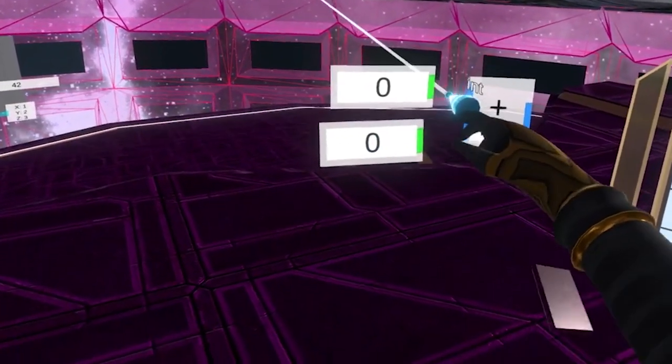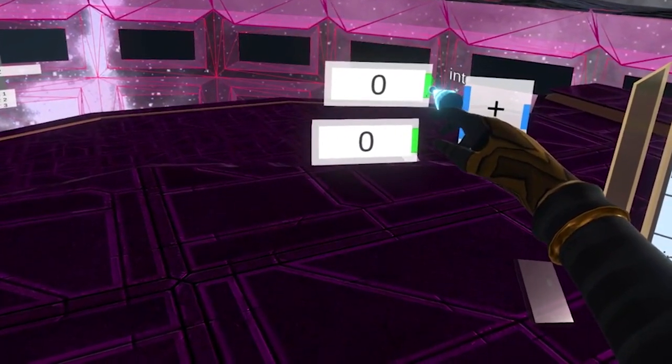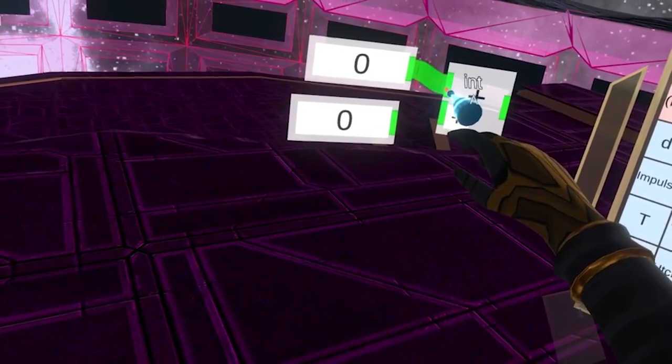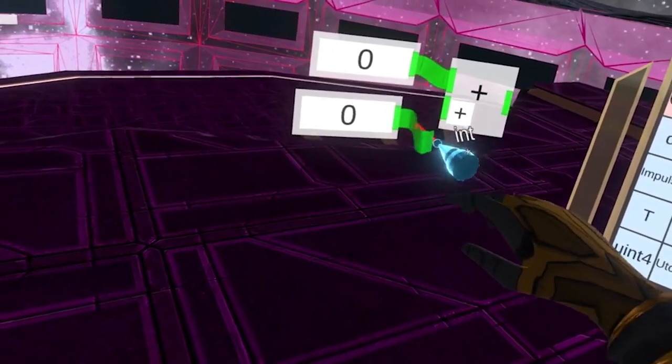We need two of these, and these nodes can be plugged into the plus node. You just press and hold the trigger button to pull out a strand, and let go to plug that strand where needed.